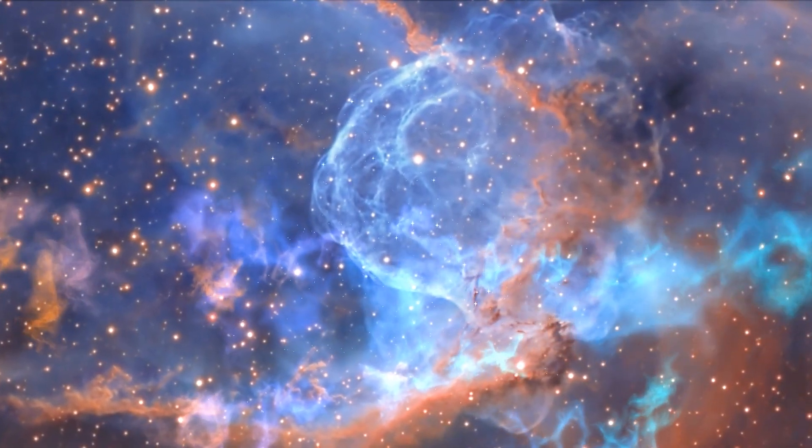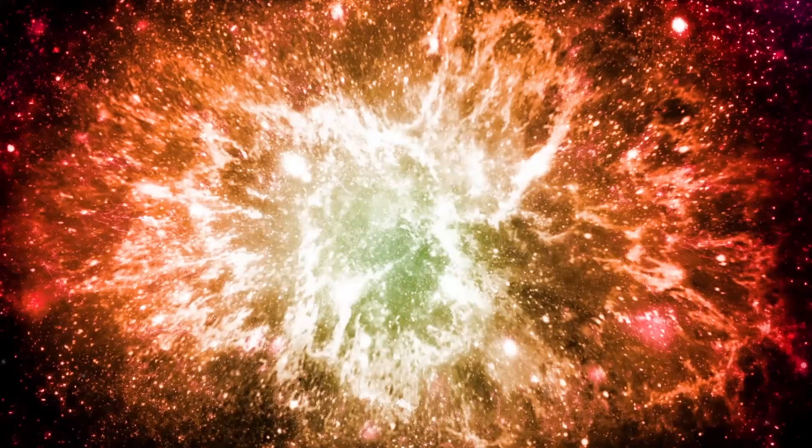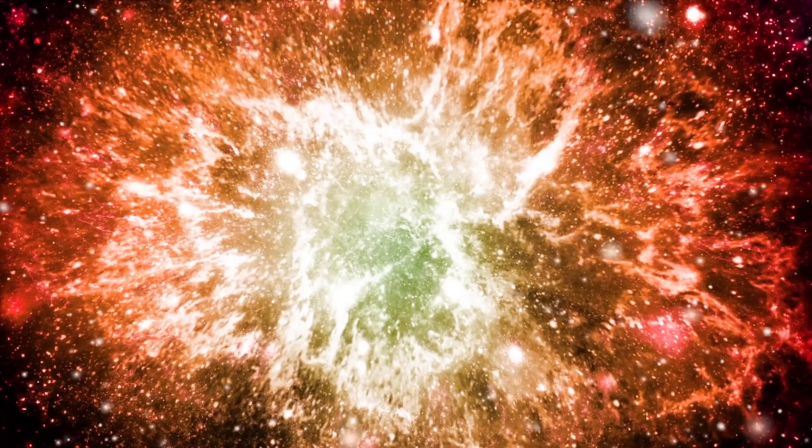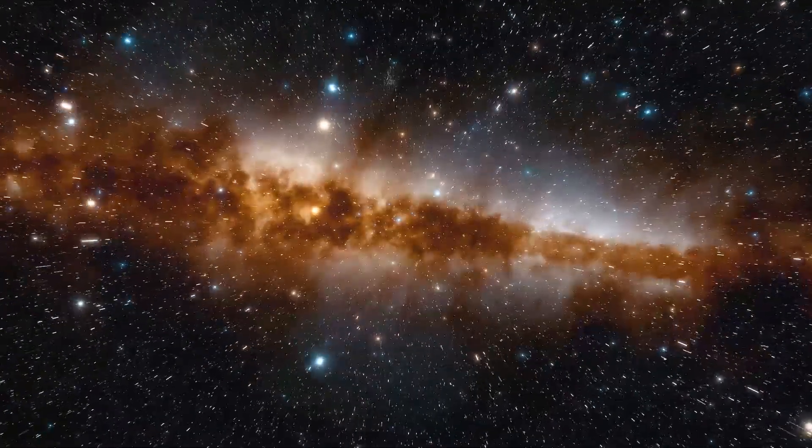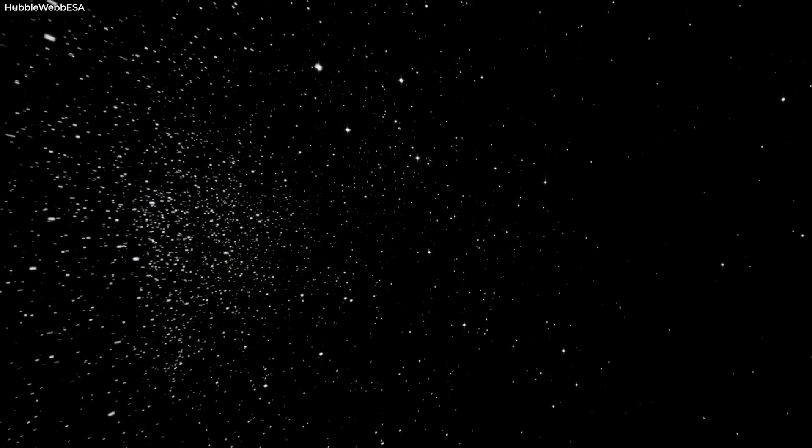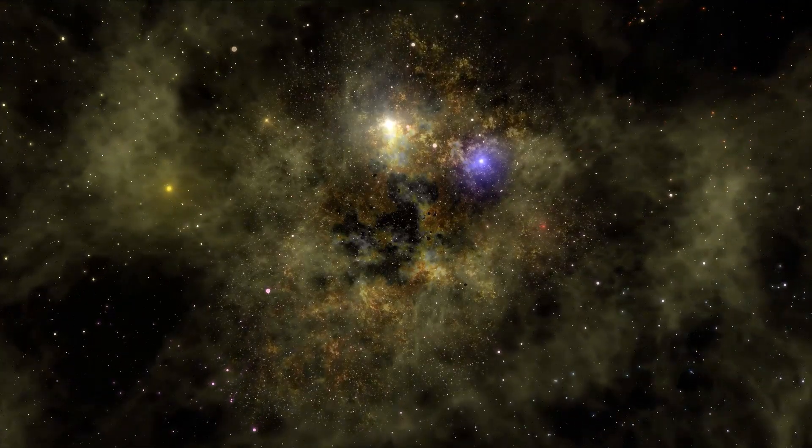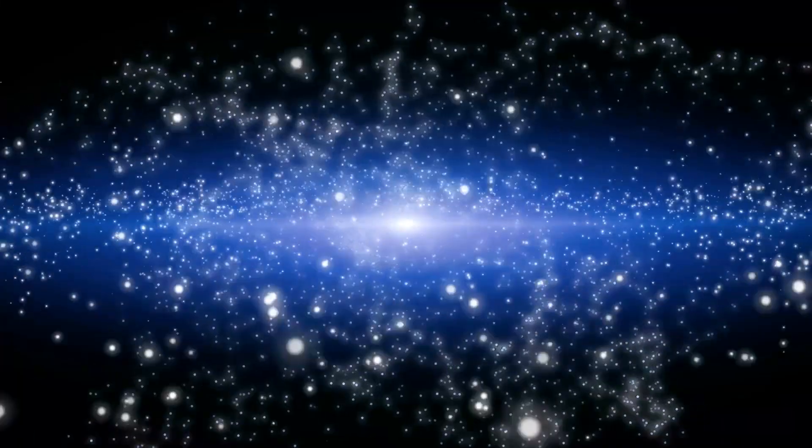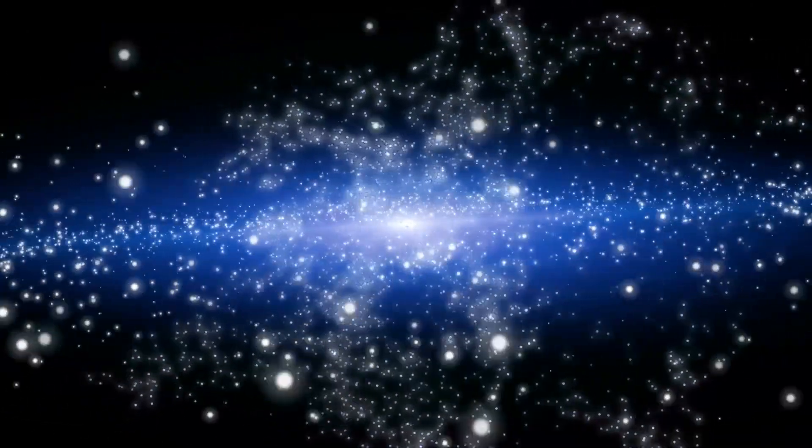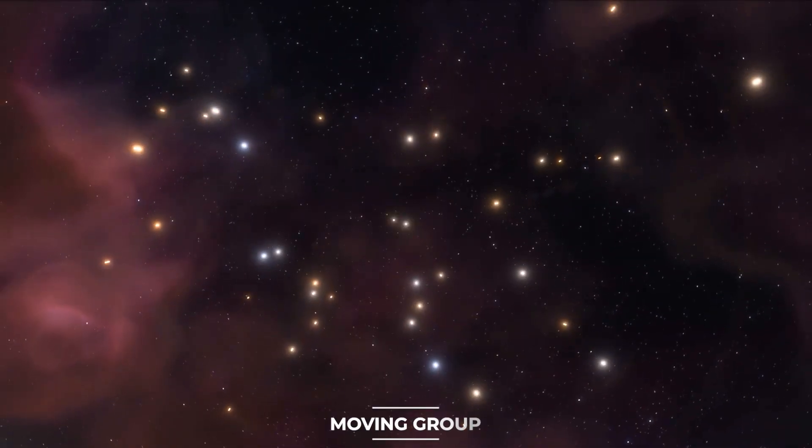The gravitational pull of massive molecular clouds causes open clusters to break apart over time as they move through the galaxy. But cluster members will continue to move roughly in the same direction through space even though they are no longer gravitationally bound. At this point, they are known as a stellar association, also known as a moving group.